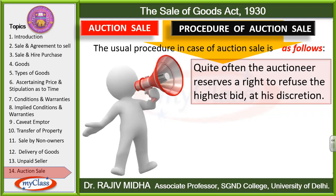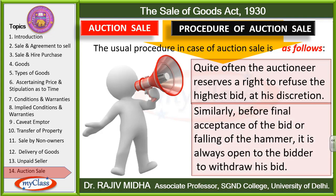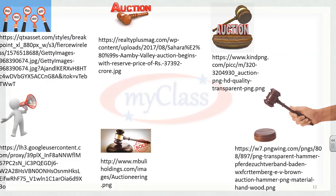Quite often, the auctioneer reserves the right to refuse the highest bidder at his discretion — अगर auctioneer को highest bidder का price acceptable नहीं है, तो वो उसे भी refuse कर सकता है। Similarly, before final acceptance or fall of the hammer, it is always open to the bidder to retract his bid — कोई भी bidder, fall of the hammer से पहले, अपनी बोली को वापस ले सकता है।